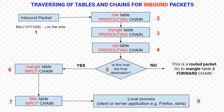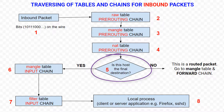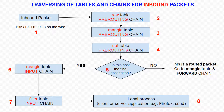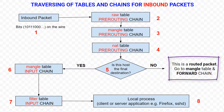After the NAT table of the pre-routing chain is traversed, it comes the routing decision. The Linux kernel must decide if this host is the final destination of the packet, or if it should be routed to another host. If this host is not the final destination, the packet will be routed and it gets to the mangle table and forward chain.